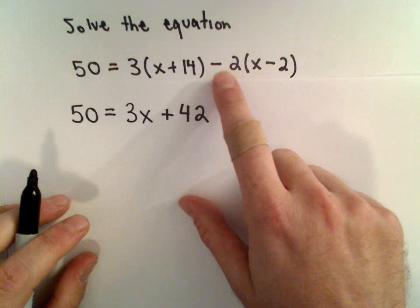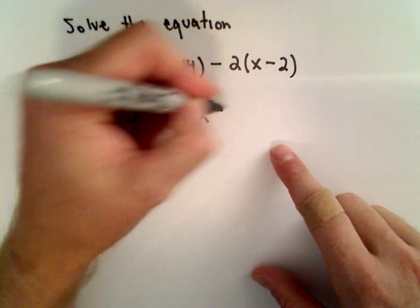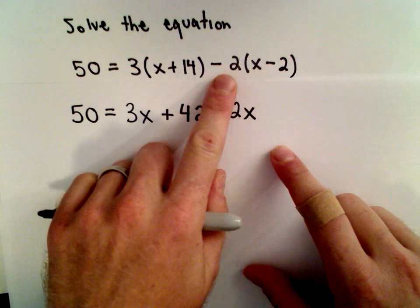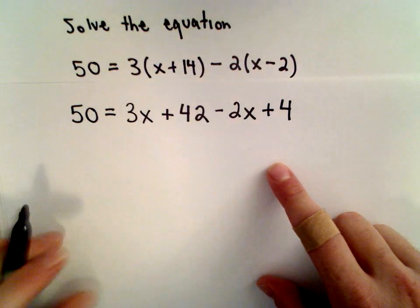Now, for the next term, we've got negative 2 multiplied by x, that's going to give us negative 2x. Then we have negative 2 multiplied by negative 2, that's going to give us positive 4.